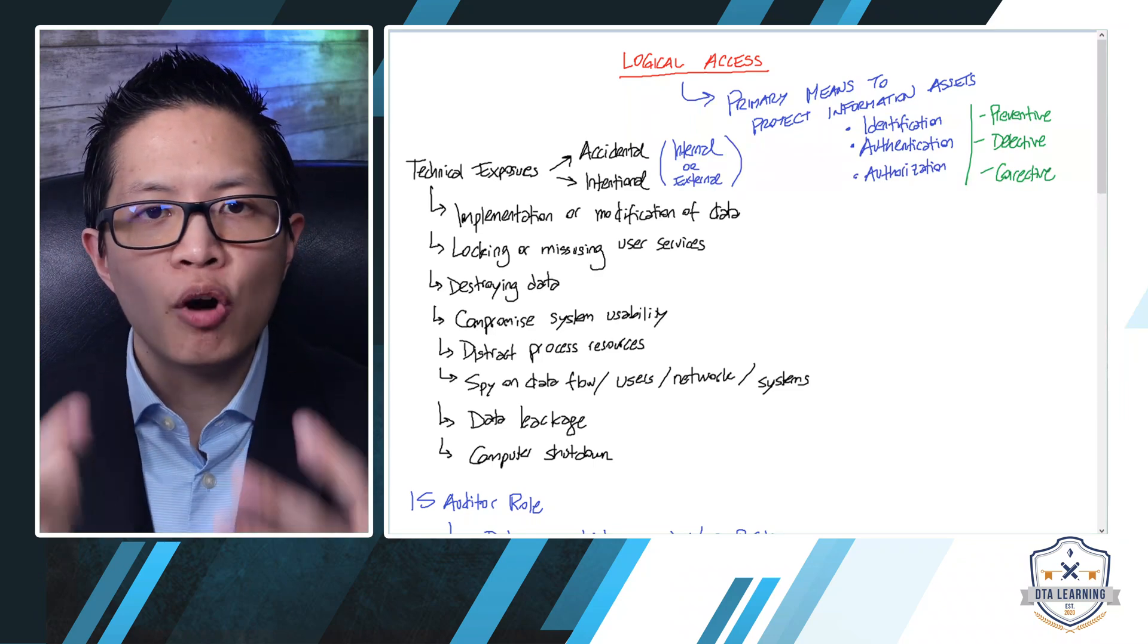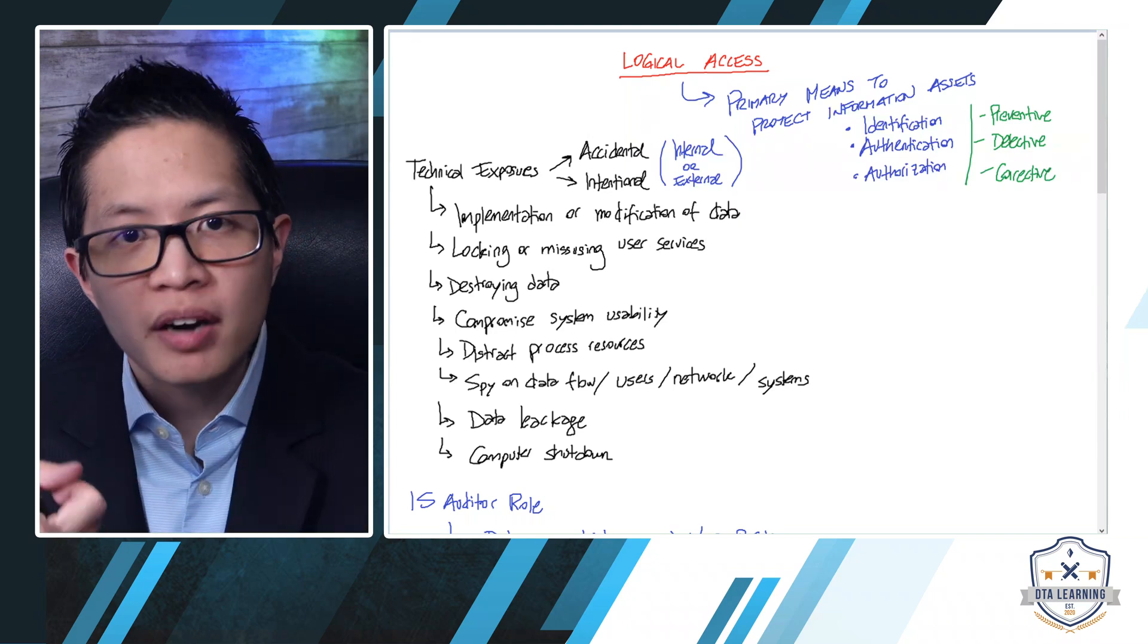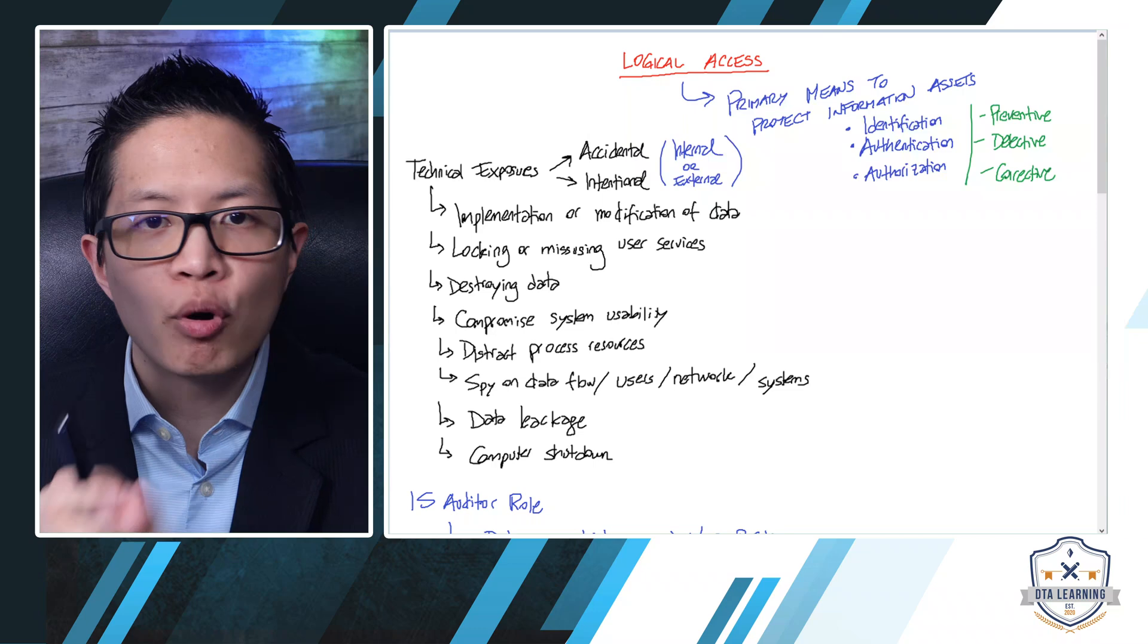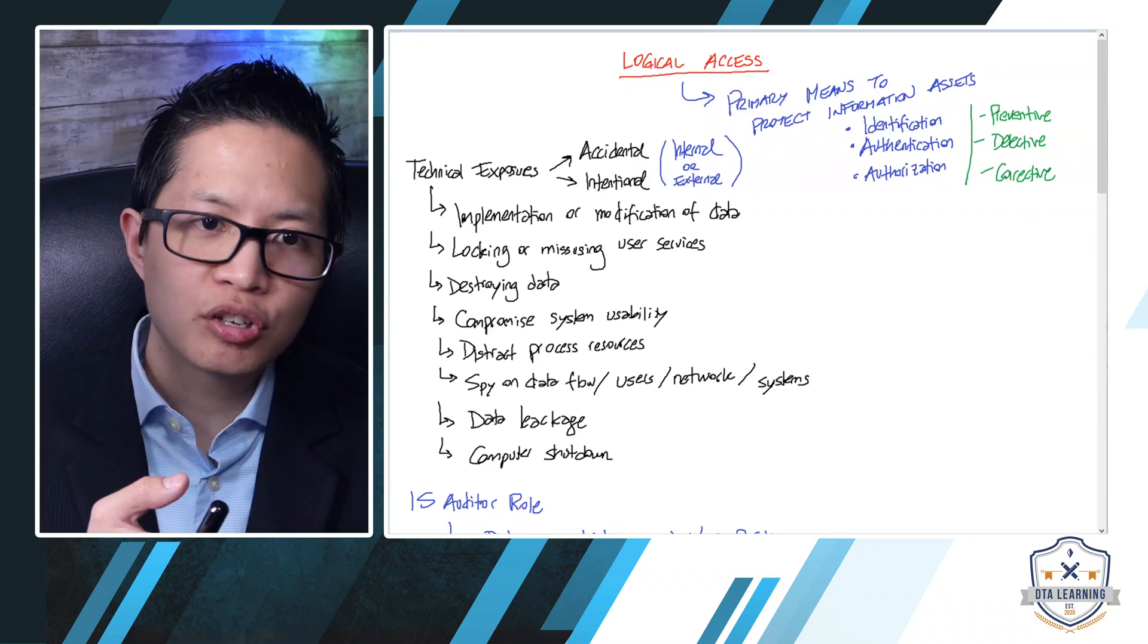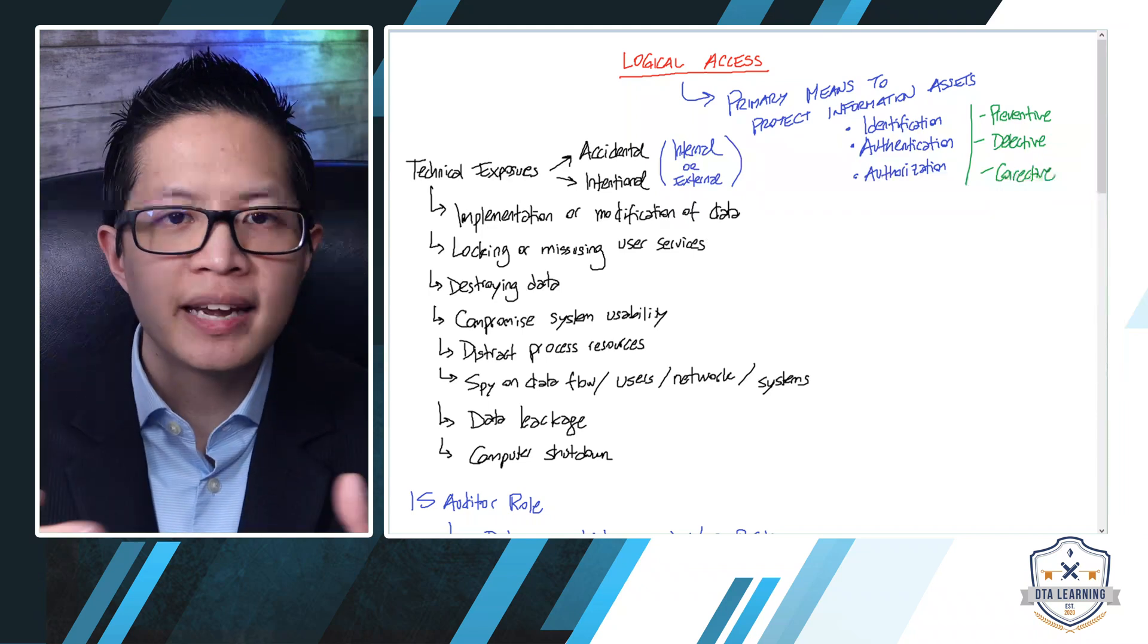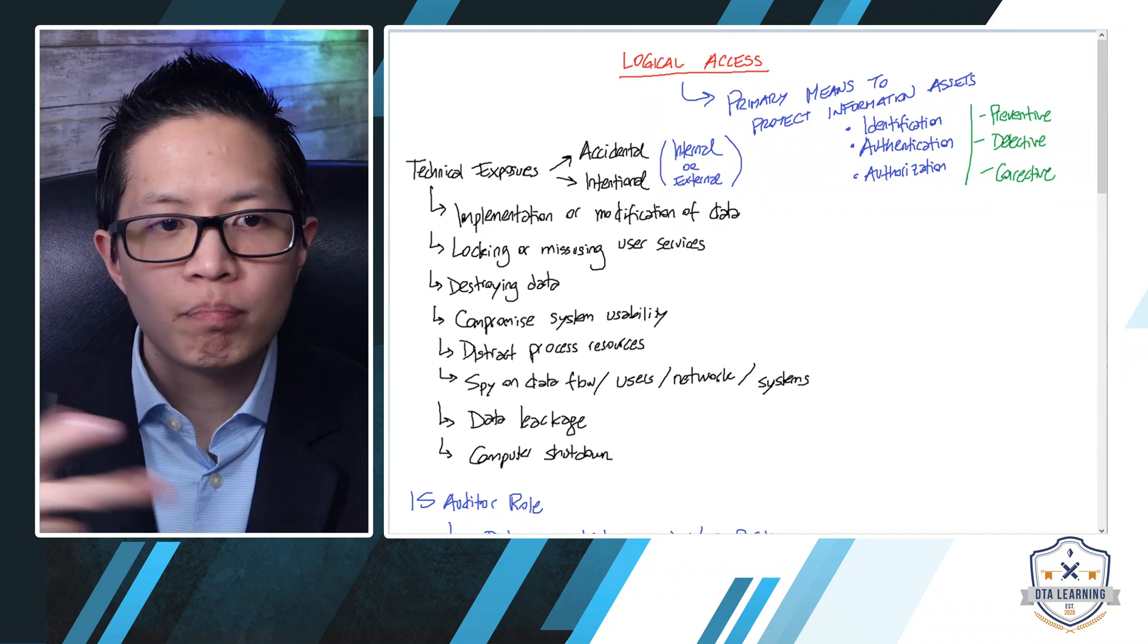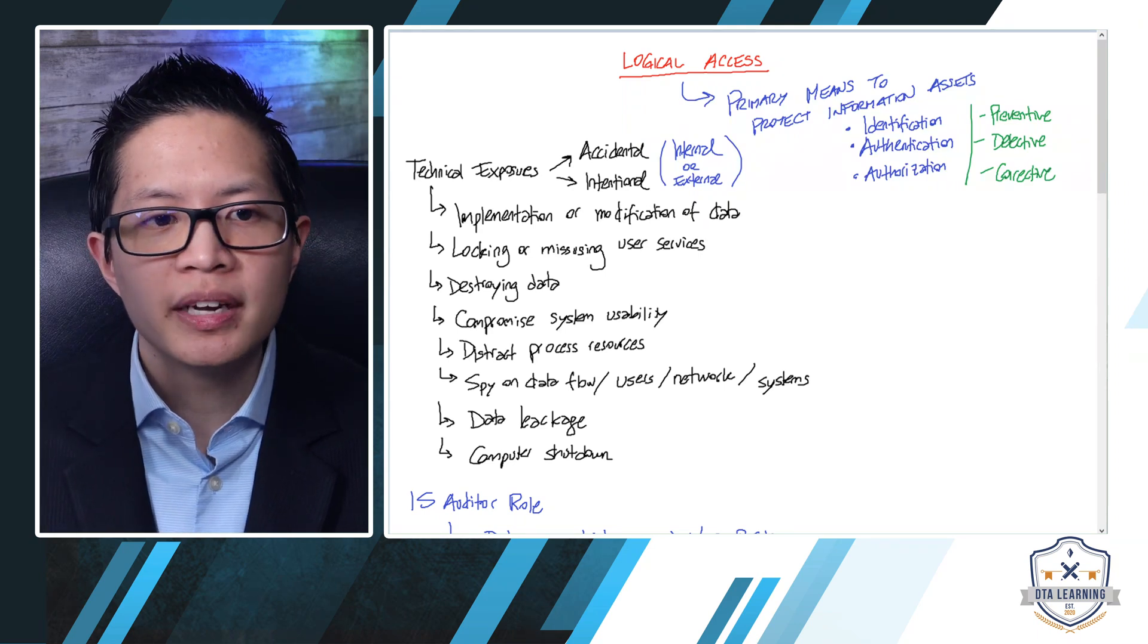Internal users mean that their own employees, that they already have access, they try to either exploit their access or trying to gain more access. It could be either accidental or unintentional. Same way goes for external users. They could either get access to your system potentially accidentally, or most of the cases are usually intentional.